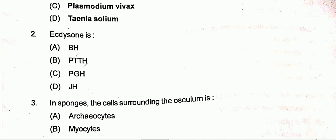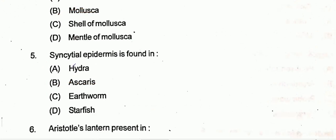Question two is about a hormone — the answer will be option D. Third question: in sponges, the cells surrounding the osculum — the answer will be myocytes, so option B will be the correct one.